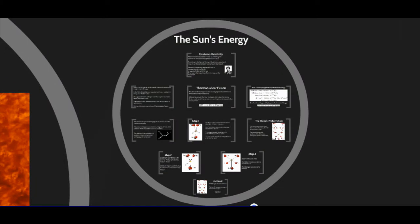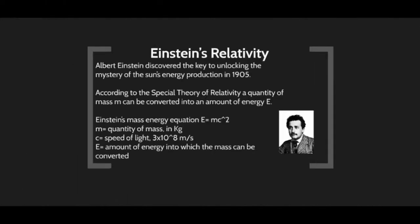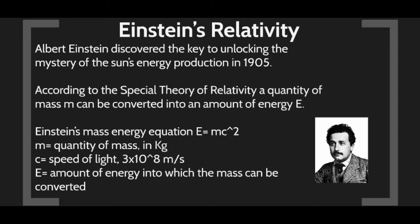In this part of the lesson we want to talk about where the Sun gets its energy. In ancient times people thought the Sun was on fire, and then in the 19th century they thought it was some type of chemical reaction. It wasn't until Albert Einstein at the beginning of the 20th century developed his theories of relativity, and in his theory of relativity we learned that energy and mass are interchangeable.